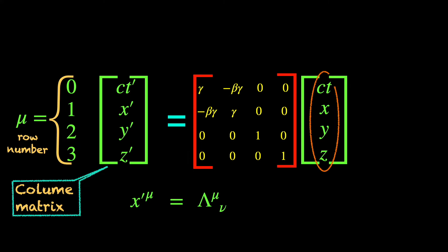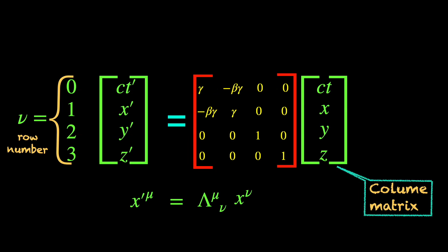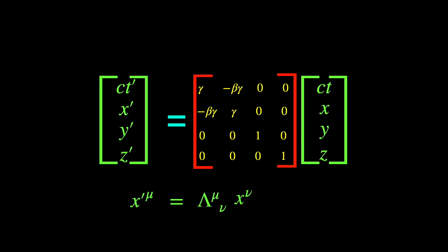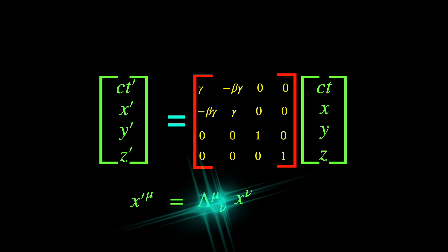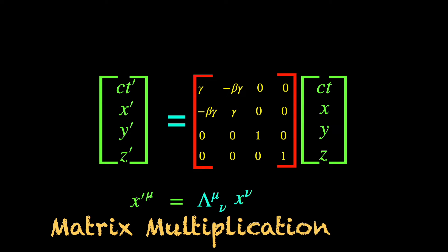To the right of lambda, we write the spacetime coordinates in S1 frame, ct and xyz as the four row entries of another column matrix, collectively denoted by x nu. The four values 0, 1, 2 and 3 taken by the index nu which is a superscript, again track the four row entries of the column matrix. We say the Lorentz matrix lambda mu nu operates to its right on the column matrix x nu by matrix multiplication to transform it to the column matrix x mu prime on the left.